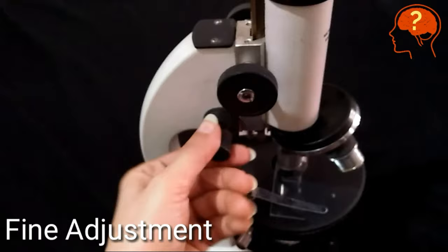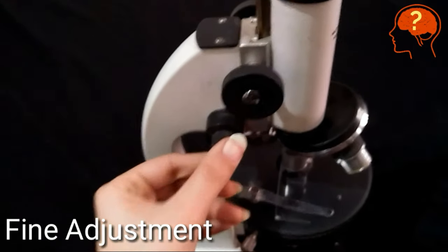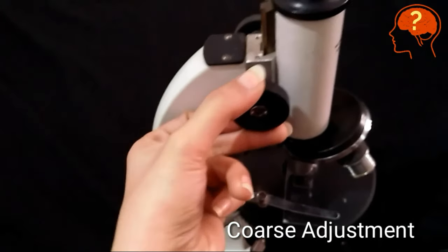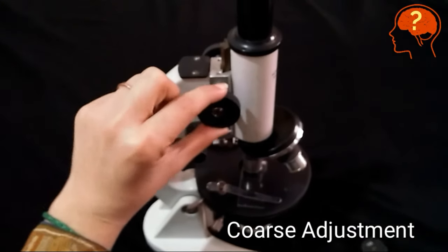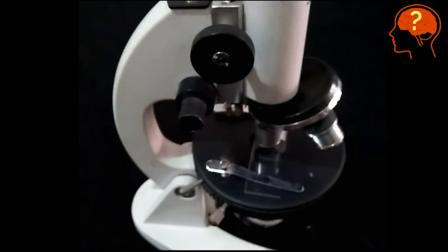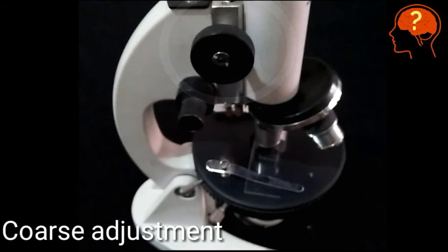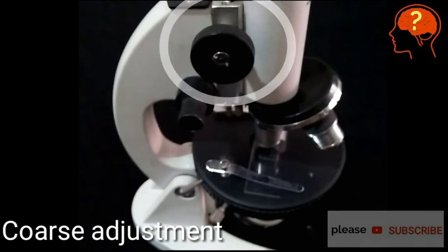This structure is called fine adjustment or fine focus, while this structure is called coarse adjustment or coarse focus. You can focus the specimen by rotating the coarse adjustment according to your eyesight.